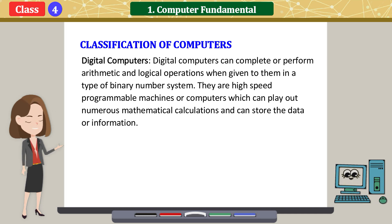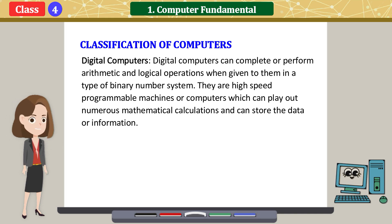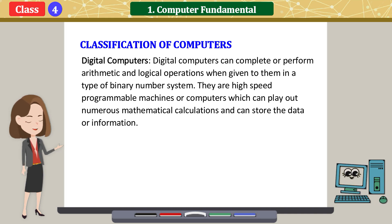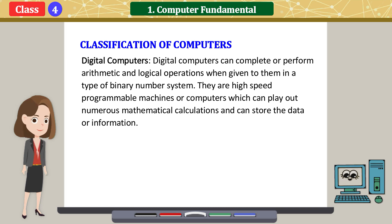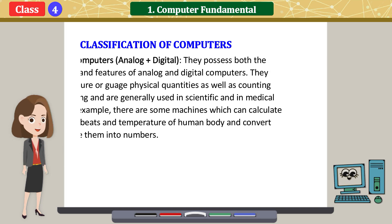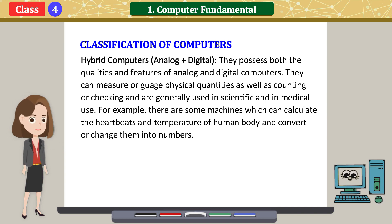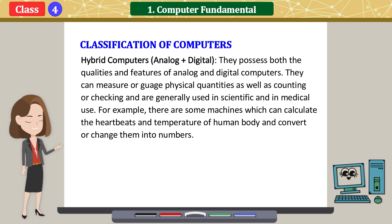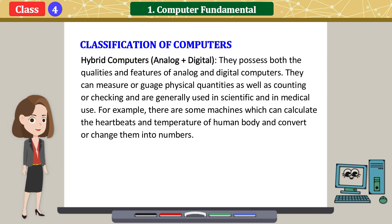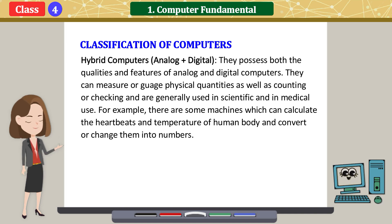Digital computers: digital computers can perform arithmetic and logical operations when given to them in the form of a binary number system. They are speed-programmable machines which can carry out numerous mathematical calculations and can store data or information. Hybrid computers: they possess both the qualities and features of analog and digital computers. They can measure physical quantities as well as counting, and are generally used in scientific and medical use. For example, there are machines which can calculate the heartbeats and temperature of the human body and convert them into numbers.